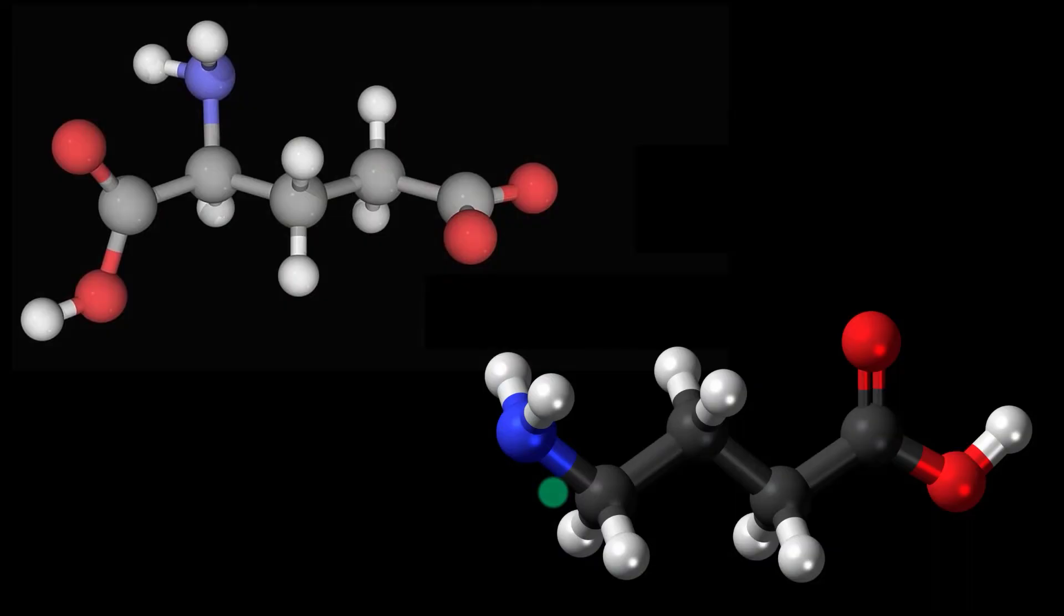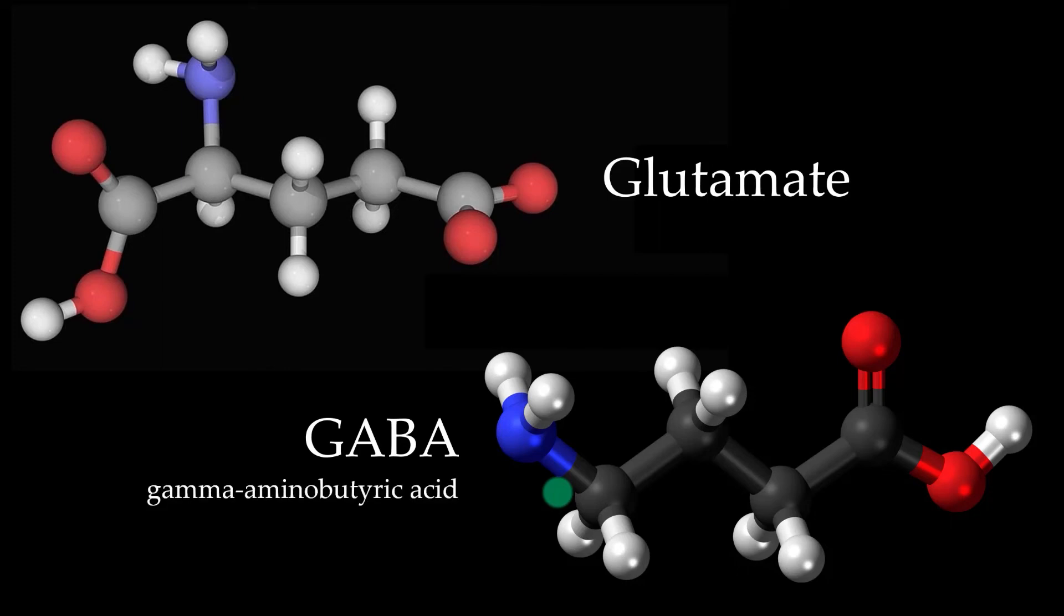For example, check these two lovely molecules out. The guy on the top is glutamate, and below is GABA. You do not want to know what it stands for. Okay, fine, you asked. It's gamma-aminobutyric acid. Yup. Let's just call it GABA.